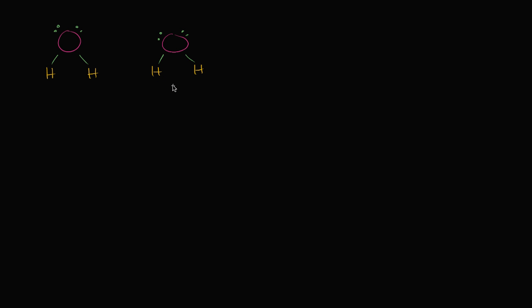But chemistry is much messier than sometimes our diagrams or explanations show. There's all sorts of crazy interactions. All of these things are bumping into each other in all different ways. And not only are the molecules bumping in different ways, but at any given moment, the electrons are jumping around. On average, they might spend more time around the oxygen, forming a partially negative charge at that end, and then a partially positive charge near the hydrogens, because the hydrogens are having their electrons hogged away from them.